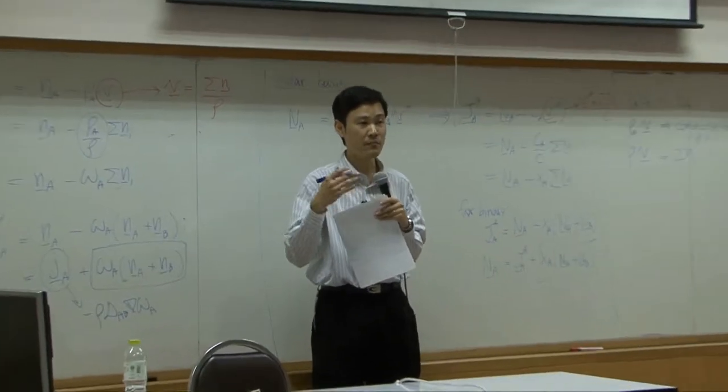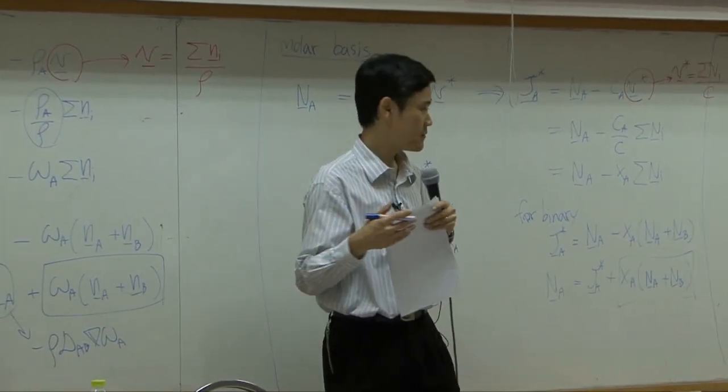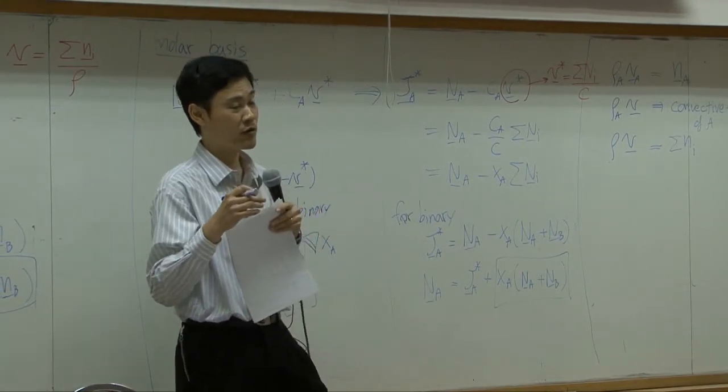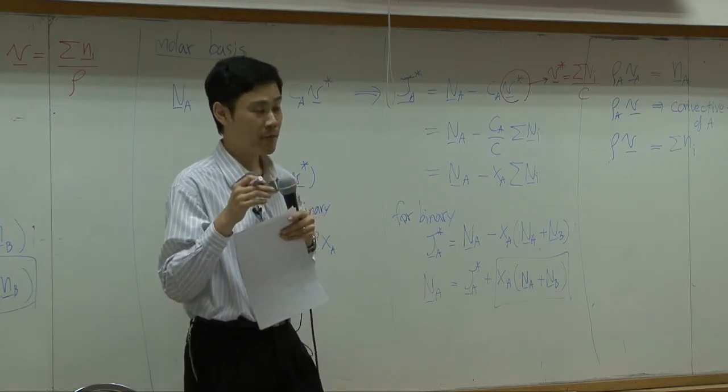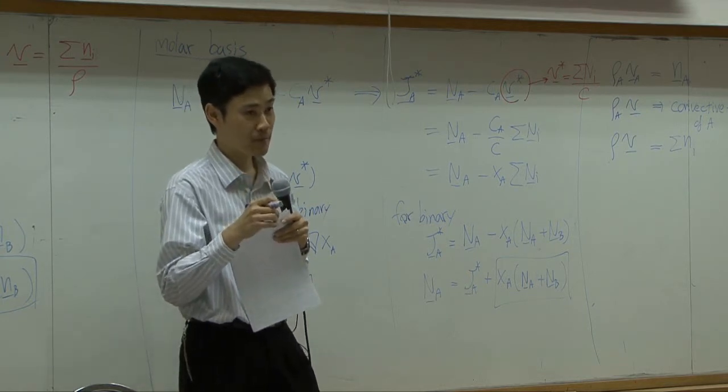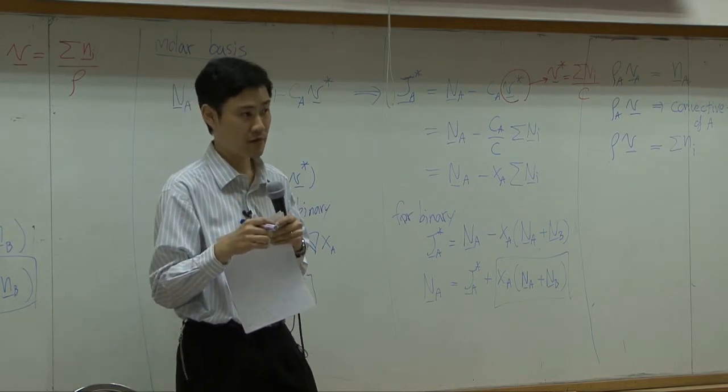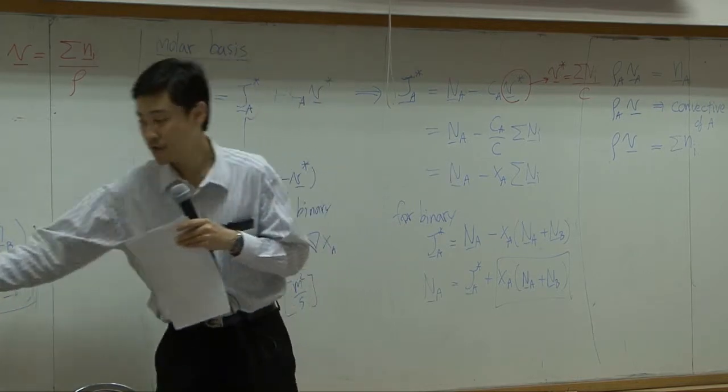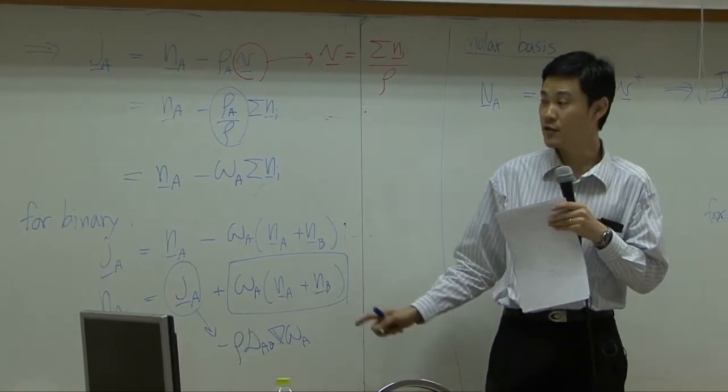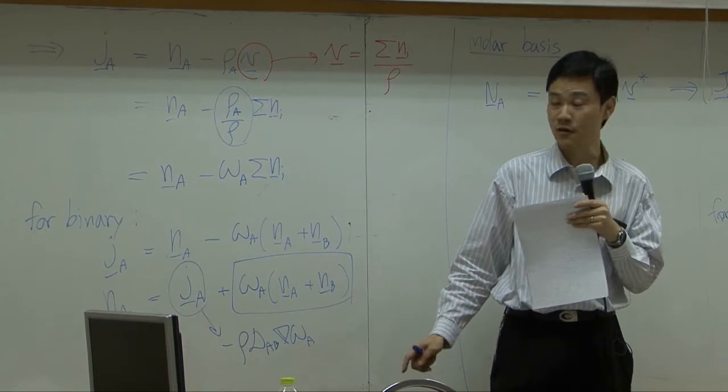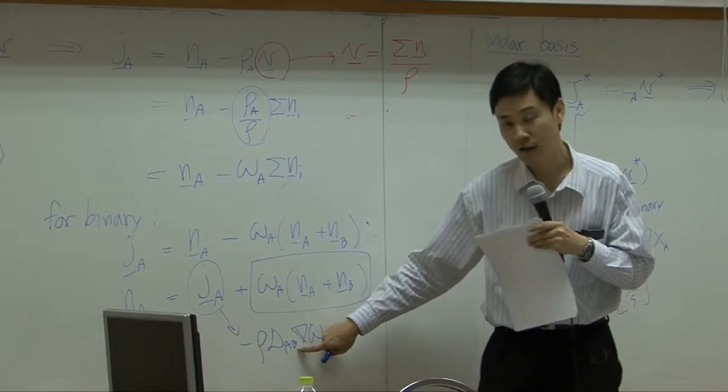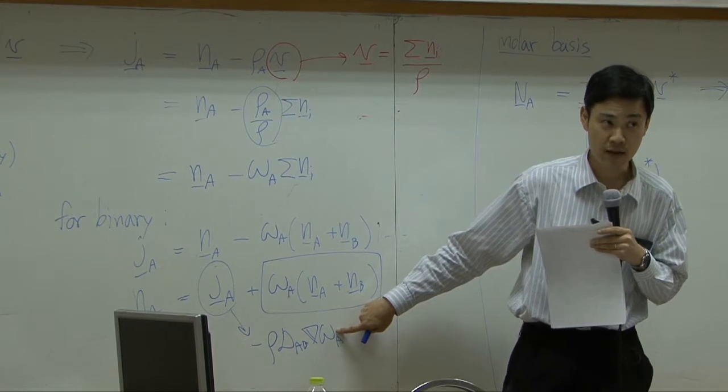On a molar basis, in shell balance you have input and output. Then you can convert the flux into what you want to measure. If you want to convert momentum flux into velocity, you use Newton's law. If you convert combined energy flux to temperature, you use Fourier's law. In here, if you want to convert combined mass flux into what you can measure, which is concentration, then you will use Fick's law. Take this into shell balance and then convert this part into Fick's law. You can get concentration. You integrate it, you get concentration profile.